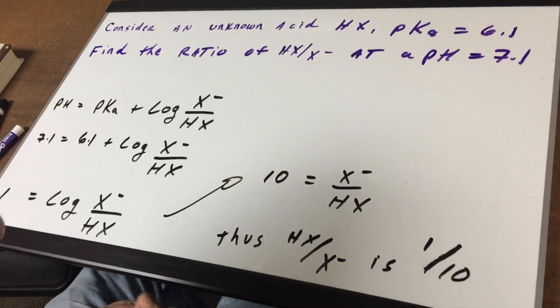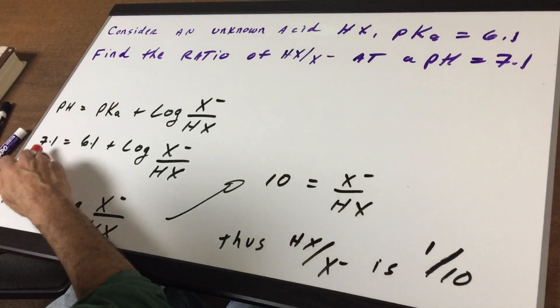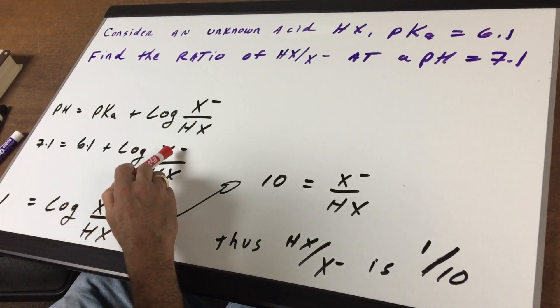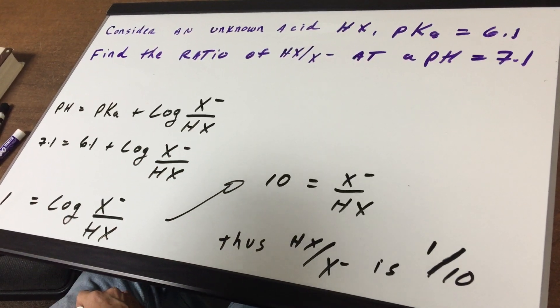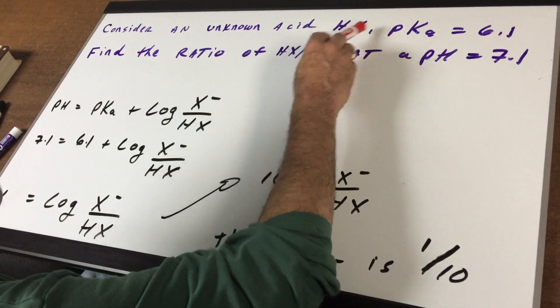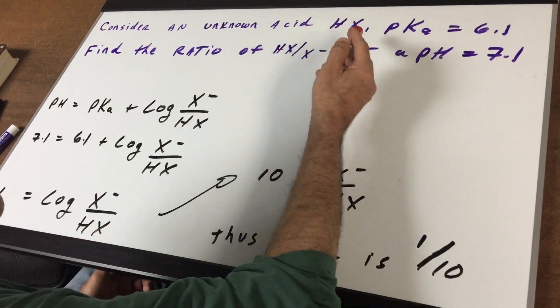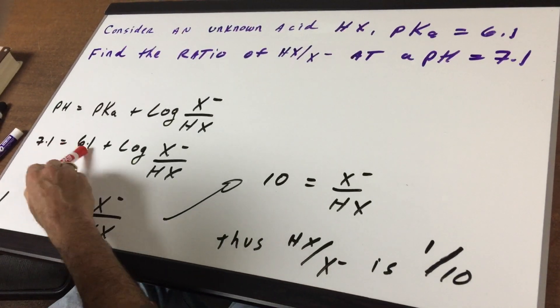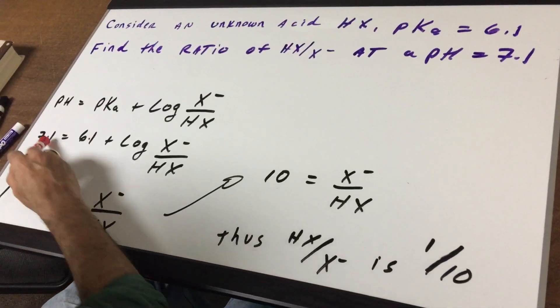So what I'm going to do is I'm going to simply put in the values, pH is 7.1, pKa is 6.1, plus the log of the salt over the acid. Now if this acid hypothetically was HF, this salt can be KF. So you get the idea what I mean by the x's.